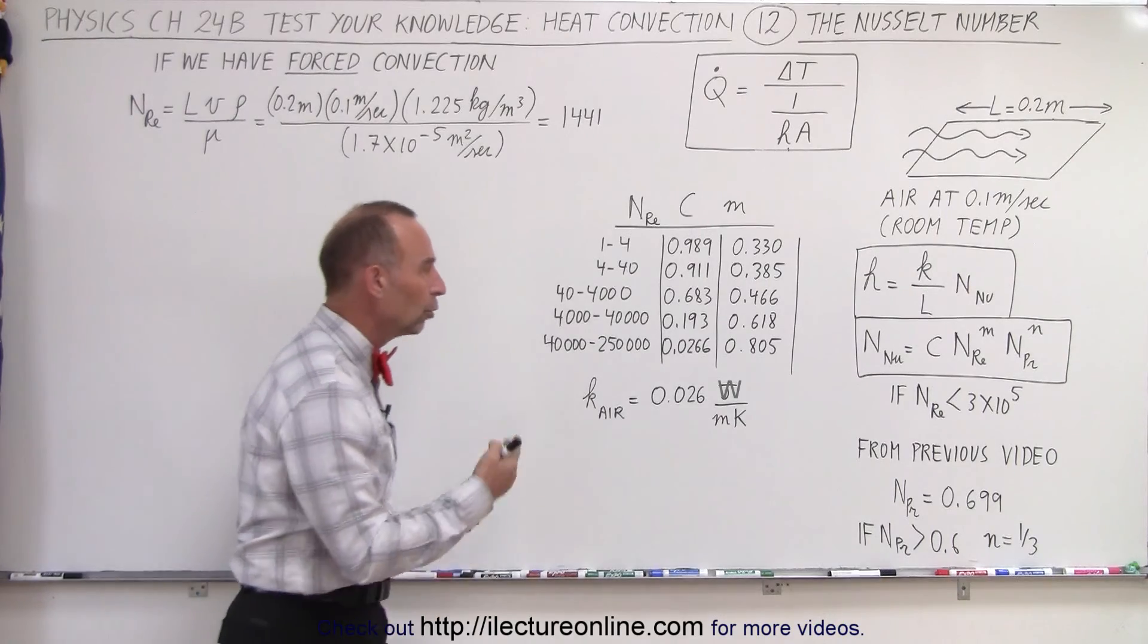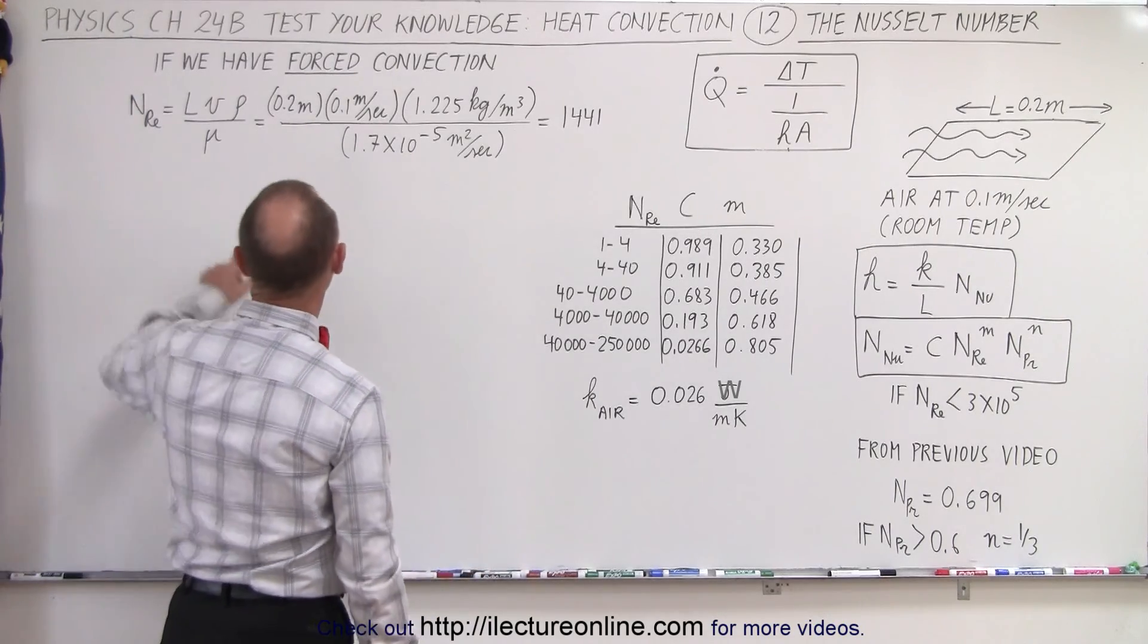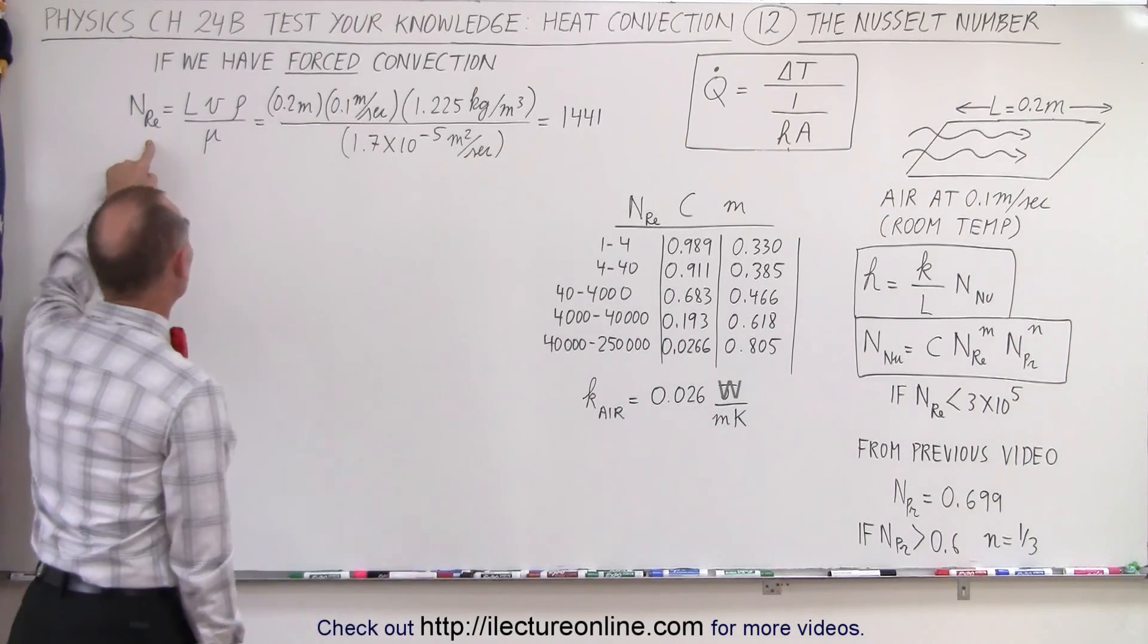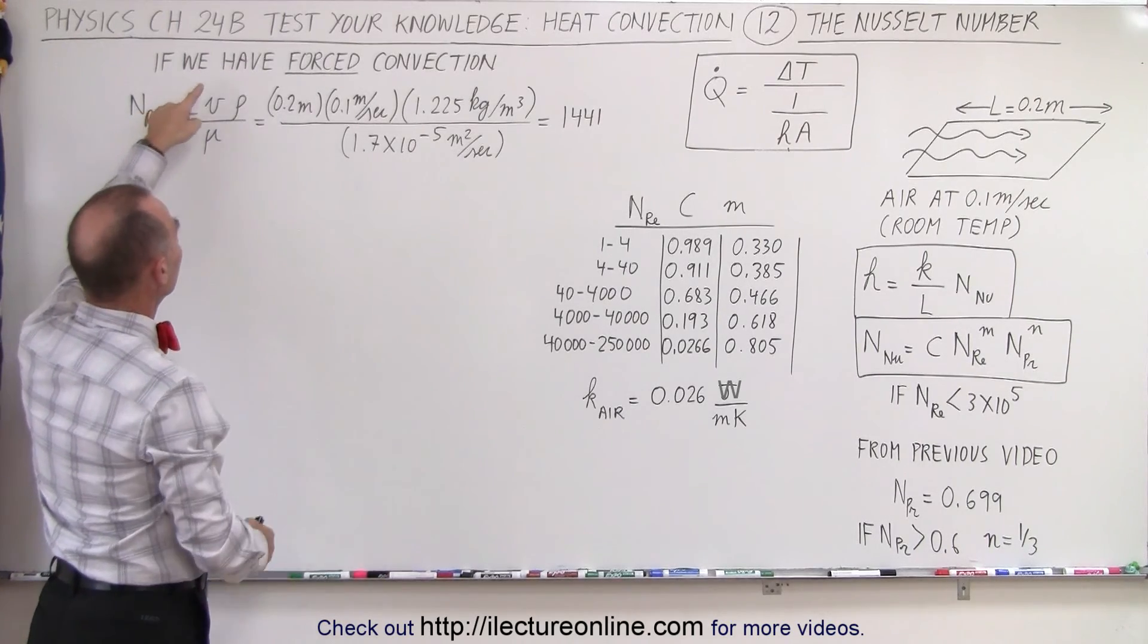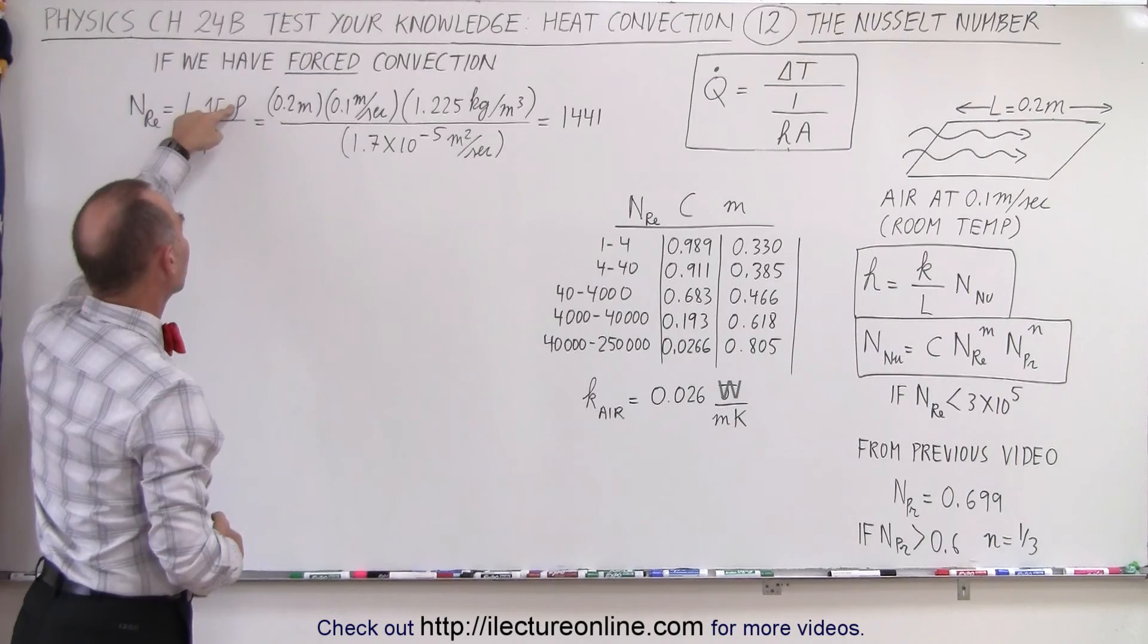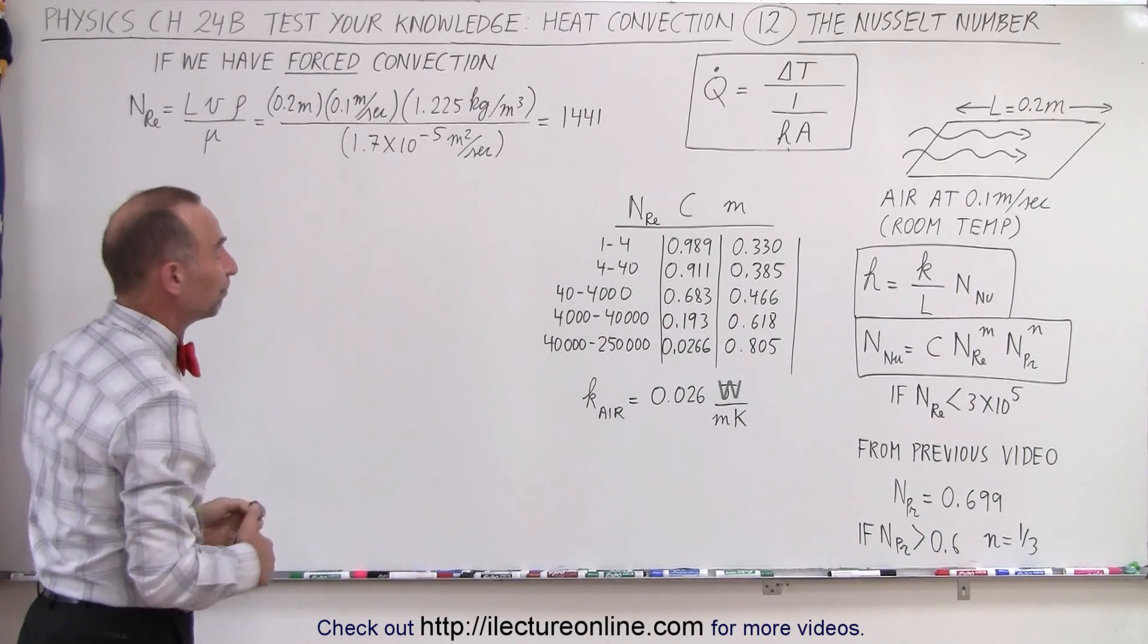So how do we calculate the Nusselt number? First of all let's calculate the Reynolds number which is equal to the product of the characteristic length of the object, the velocity of the flow, the density of the fluid, and the viscosity of the fluid.